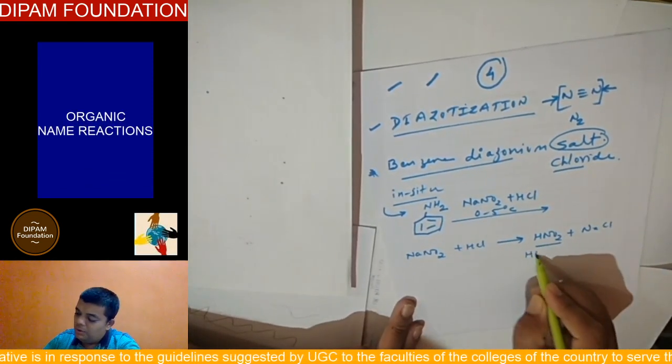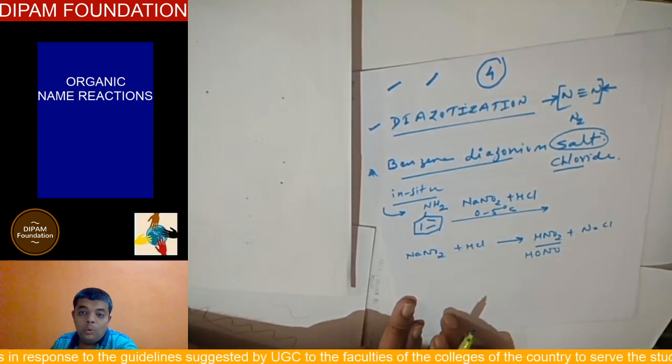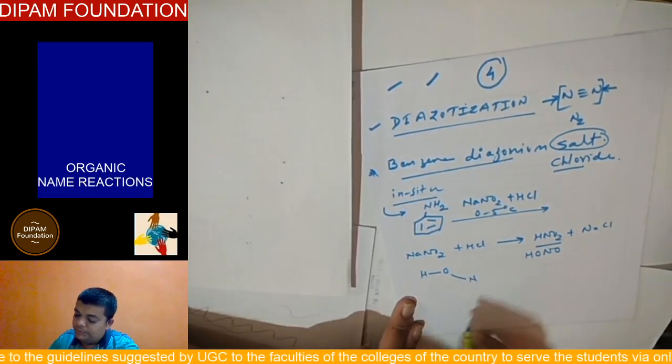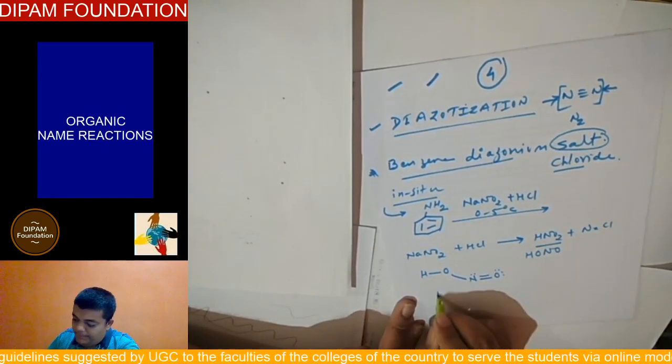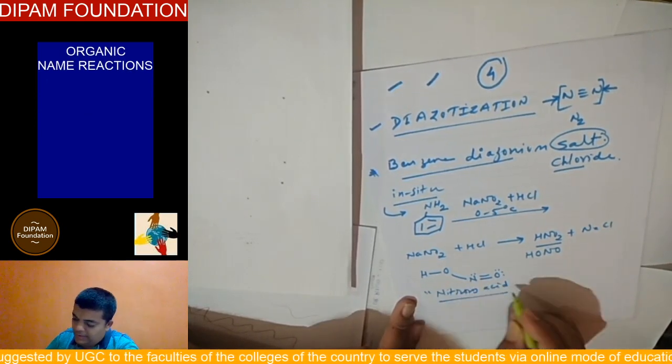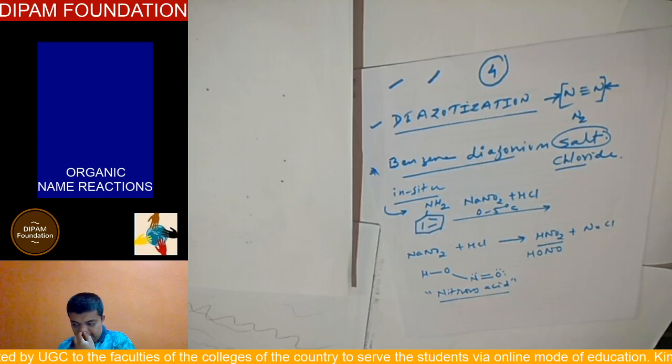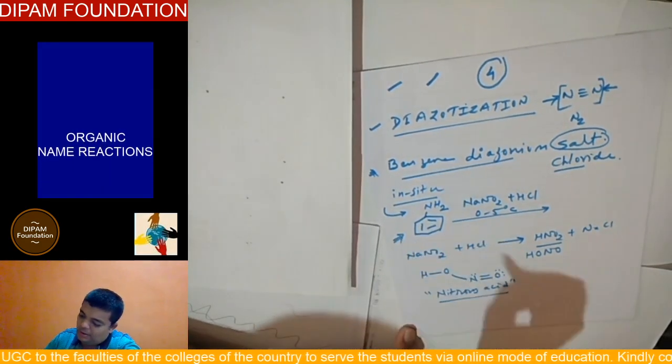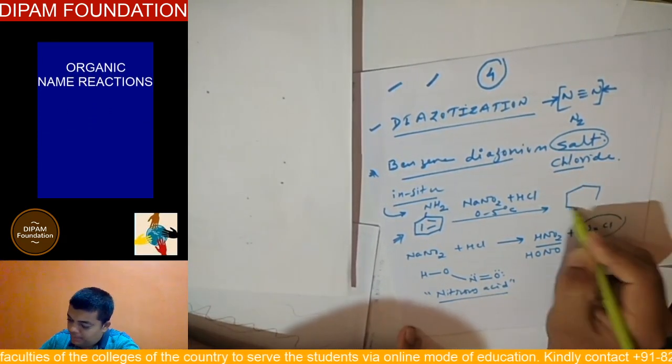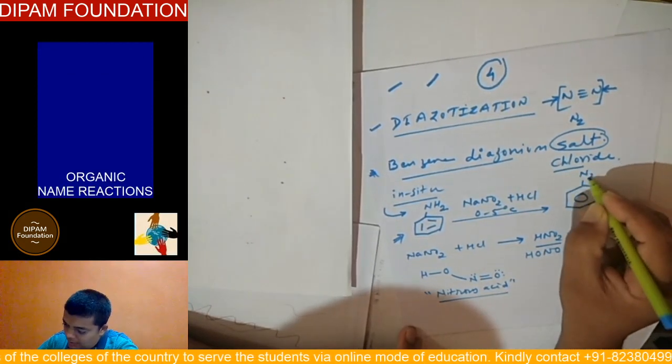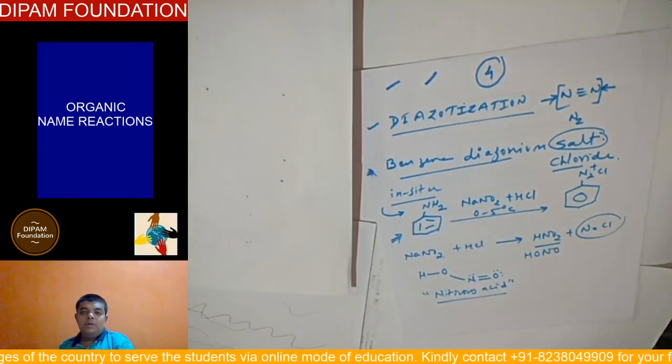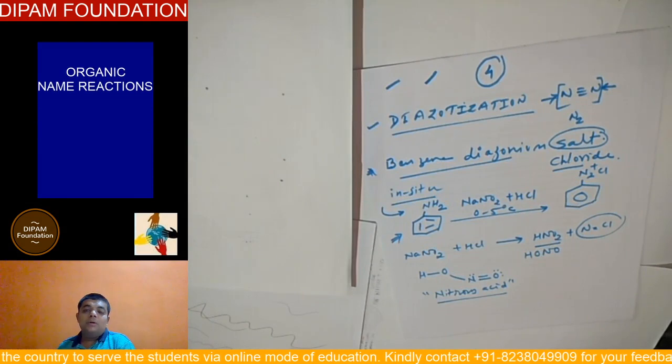This HNO2 is popularly known as HONO. And when you have a structure, check it out, then you will get a better idea. This is that popular nitrous acid. This product is popularly known as benzene diazonium chloride salt. This particular phenomenon is called diazotization.